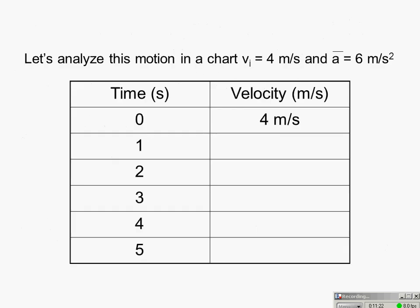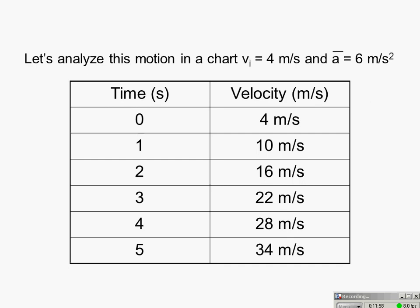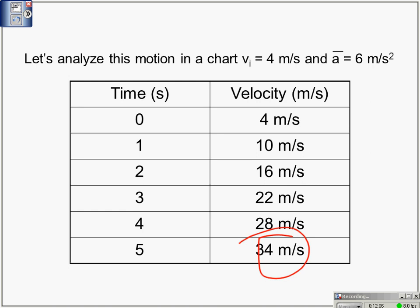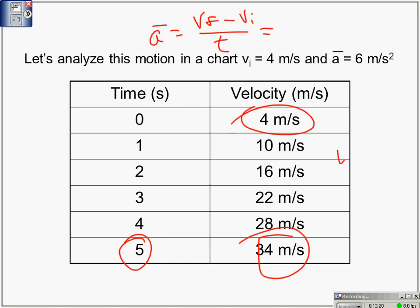Analyzing the motion in a chart: initial velocity is 4 m/s and average acceleration is 6 m/s². Starting at time zero going 4 m/s, the object gains 6 m/s every second — so after 1 s it's going 10 m/s, after 2 s: 16 m/s, after 3 s: 22 m/s, after 4 s: 28 m/s, and after 5 s: 34 m/s. This confirms our equation result; in practice, just plug values into the equation rather than building a table.